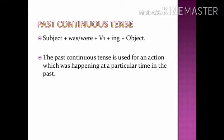Now we will see the past continuous tense. The formula is: subject plus was/were plus verb-ing plus object. The past continuous tense is used for an action which was happening at a particular time in the past — things that went on happening for some time. 'Was' is used with the singular and 'were' is used with the plural. We put verb plus 'ing' plus object. This is the form of the past continuous tense.